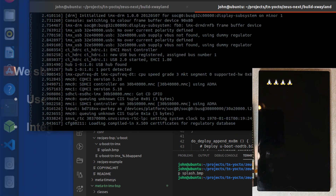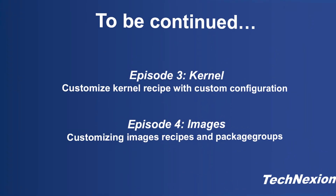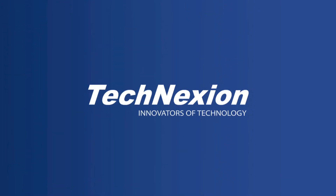Just to review what we've done in this episode: we showed you how to make a bbappend file to modify the recipe and switch the source for the recipe to your private repository. We also showed you how to include a custom splash screen image into your metadata so that it is loaded and displayed in the images that you build. In the next episode, we'll show you how to do a similar thing, but instead of the bootloader, we'll be doing it with the Linux kernel. Stay tuned. I'm John Weber — see you next time.